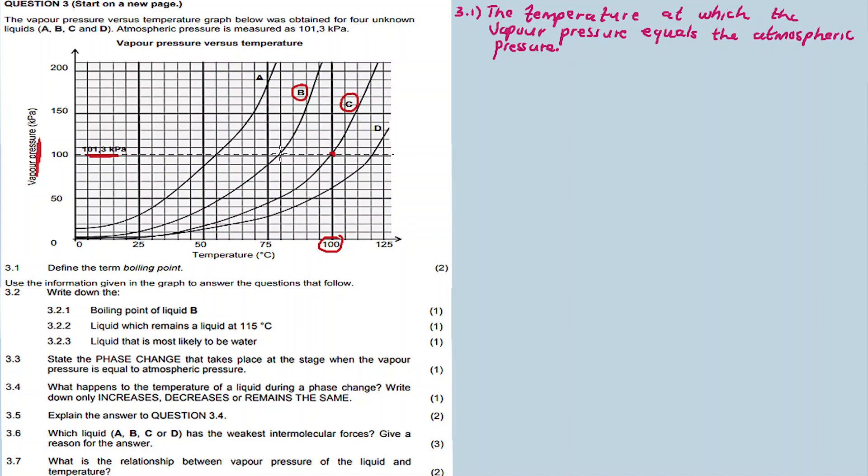This is the point where vapor pressure equals the atmospheric pressure. Basically, to find the boiling point, we go up to the point where the graph intersects this dotted line. The temperature there, by the way, each line represents 5 degrees Celsius, so it's 75, 80, 85, 90, 95, 100 degrees.